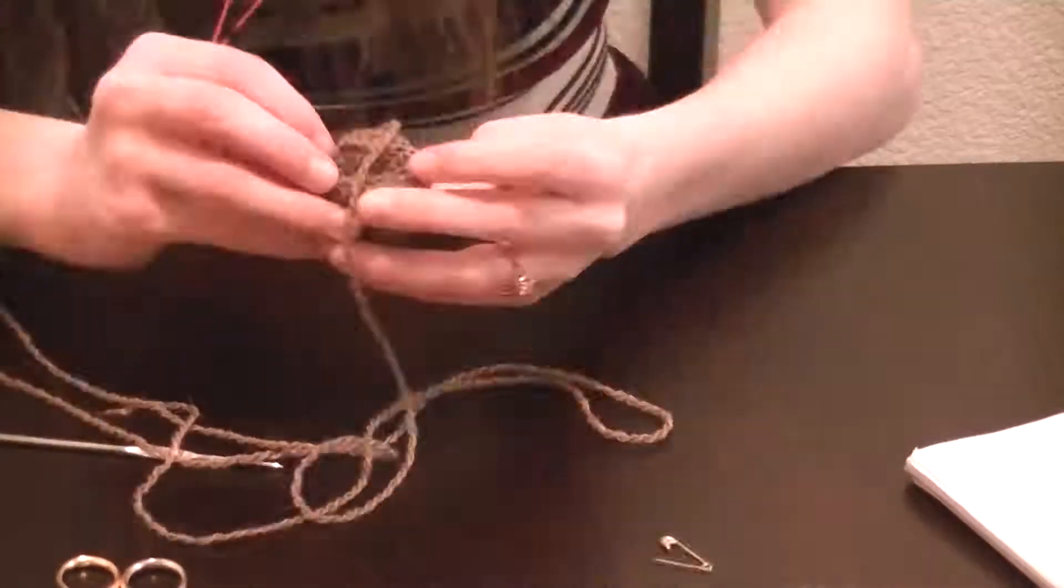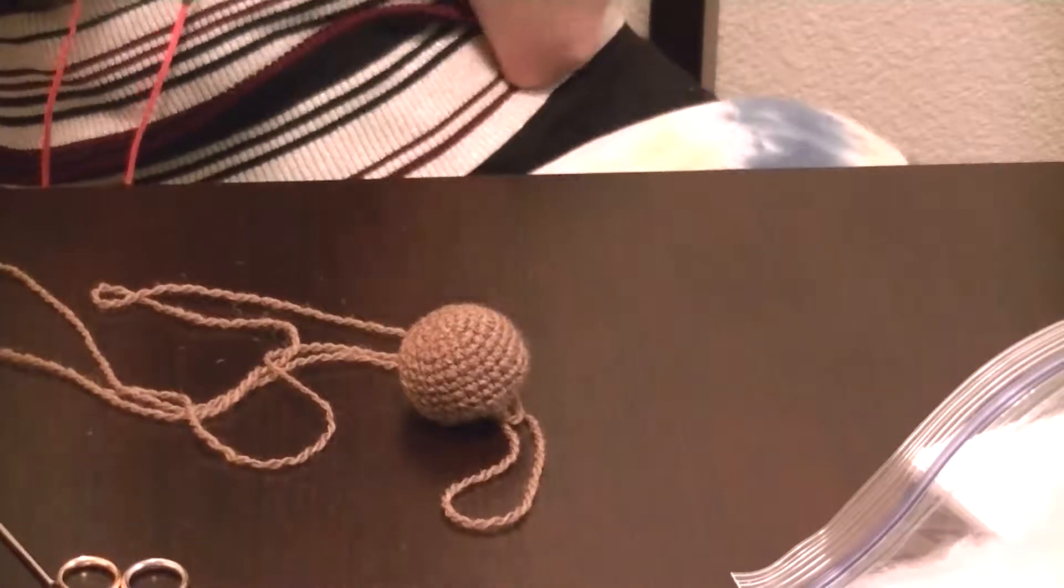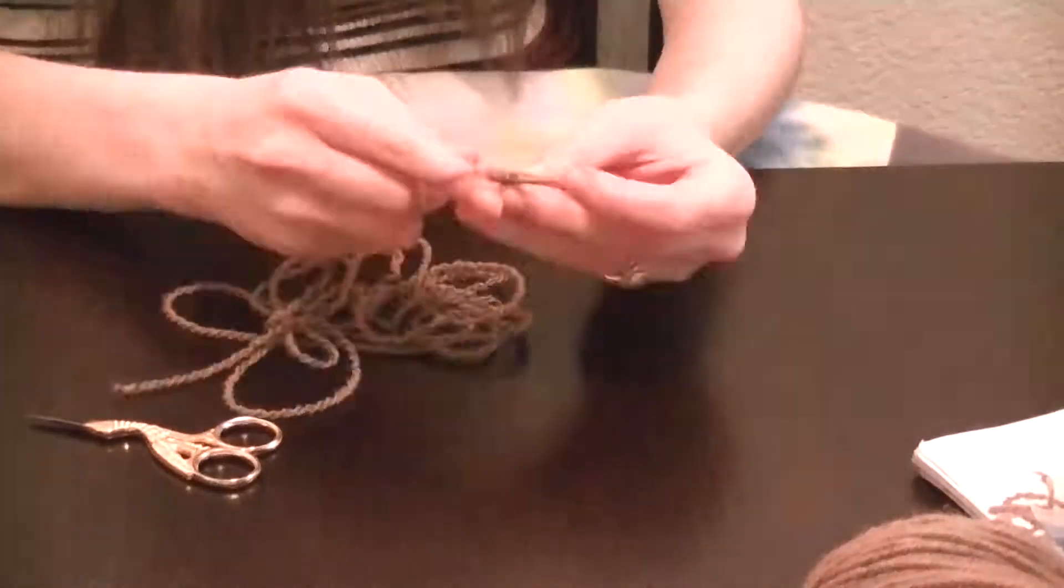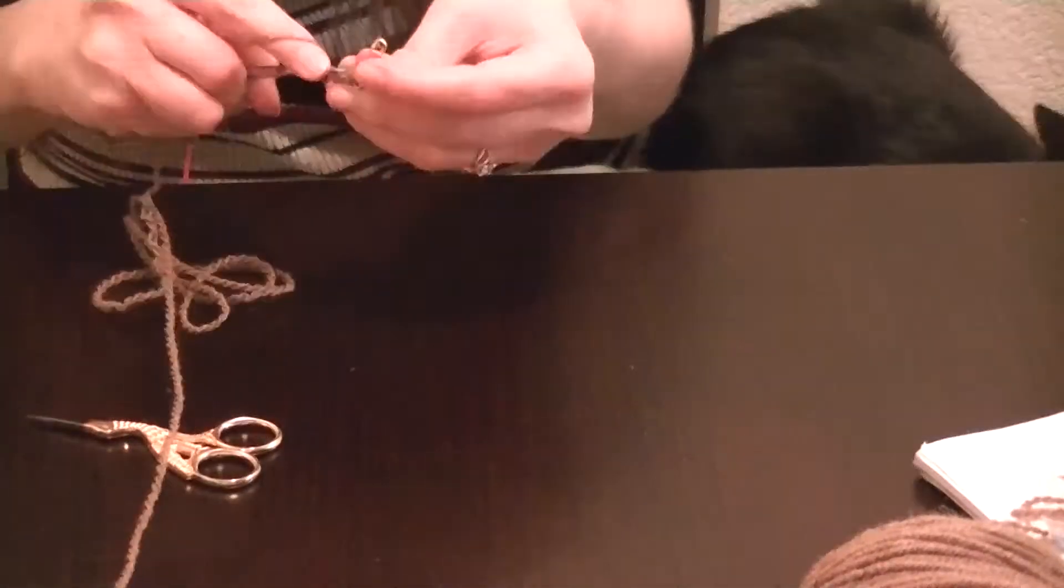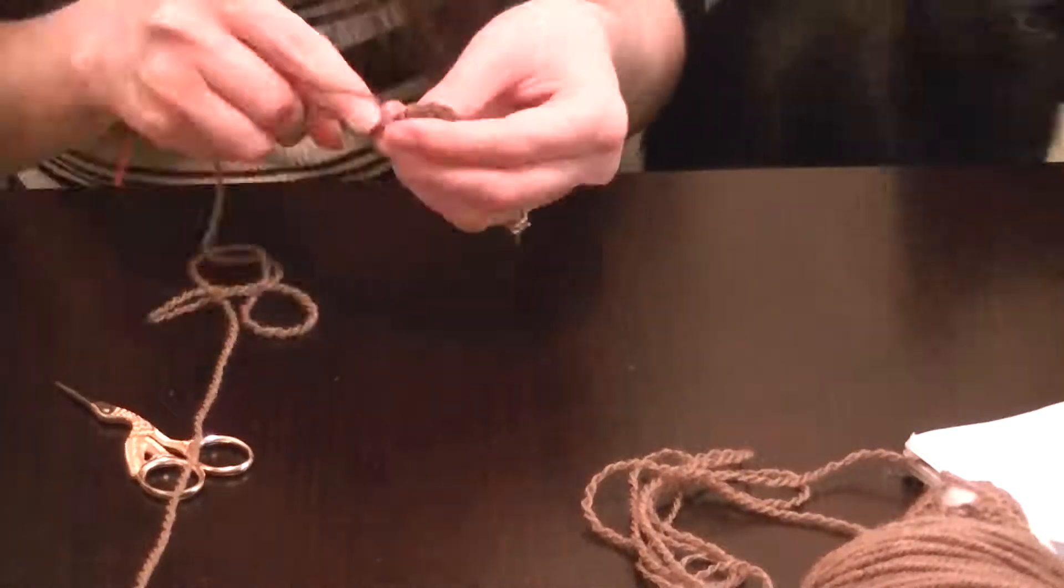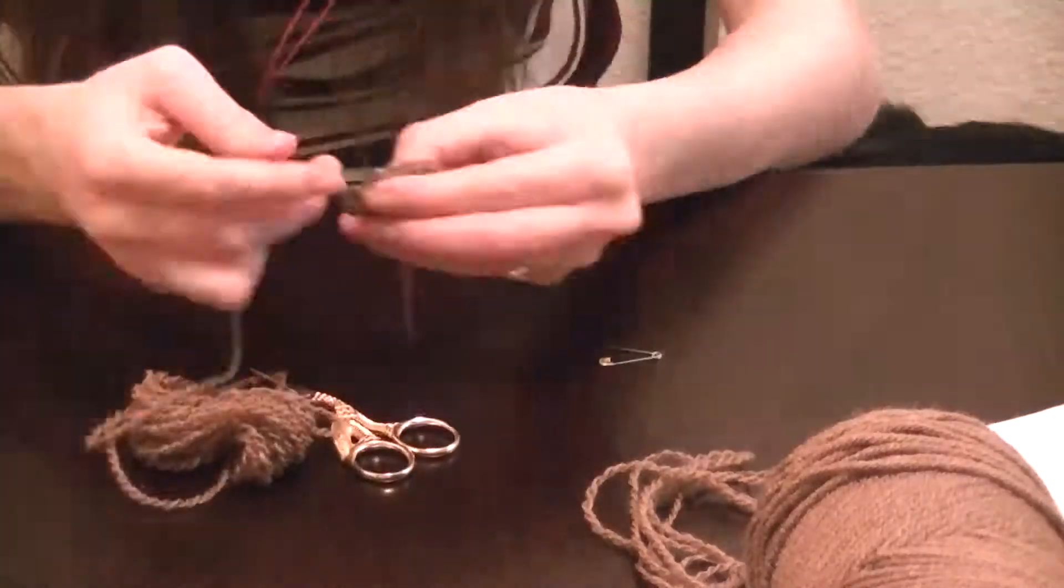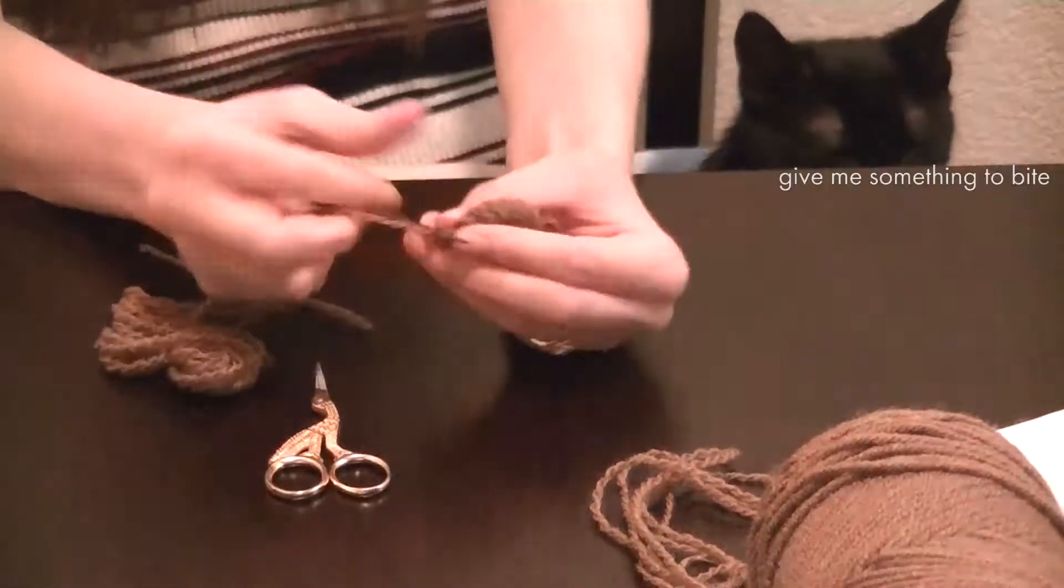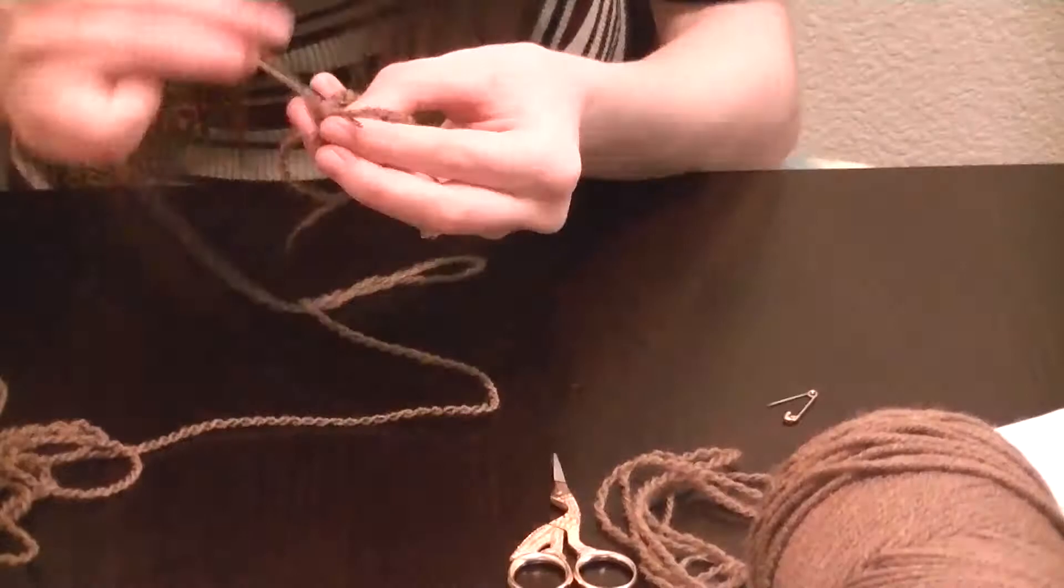Once she got me started with the whole process, I followed the directions and the very first thing I ever crocheted was a lion and it looked absolutely terrible. Not for the fault of the book, it was just, you know, when you start something brand new you are not going to be good at it. It's kind of a fact. The lion didn't have a tail and I really wanted it to have a tail because then it would look more anatomically correct, I guess. So I tried to come up with my own pattern for the tail, but it looked terrible.